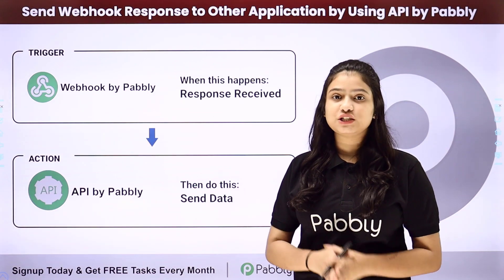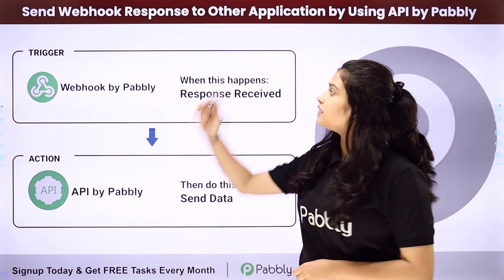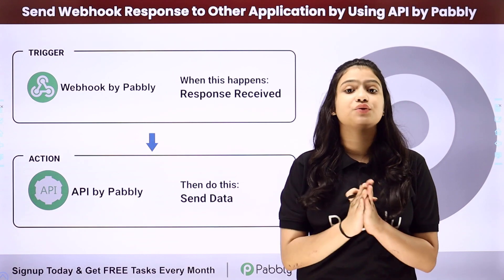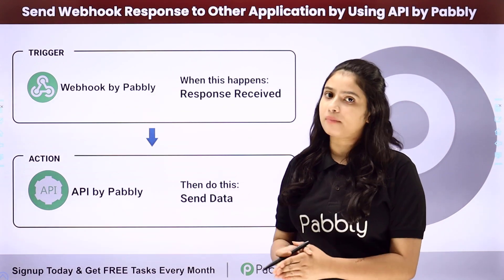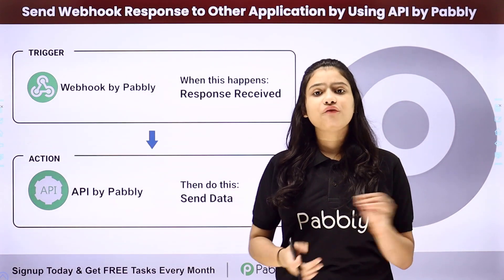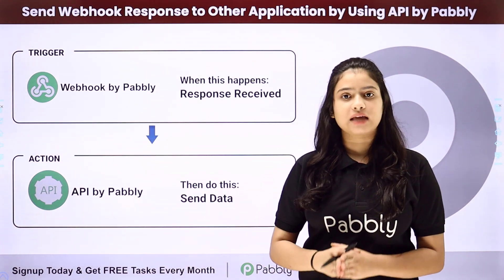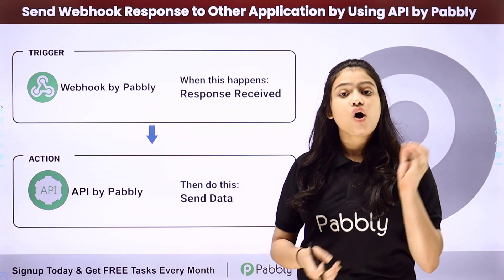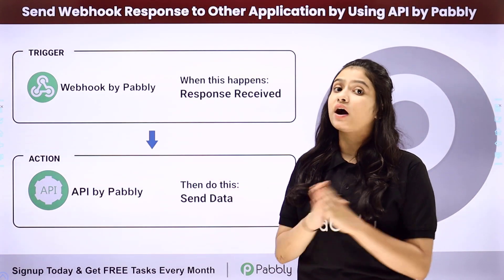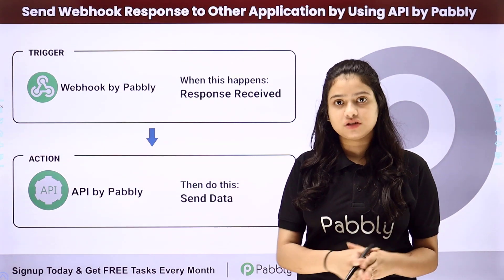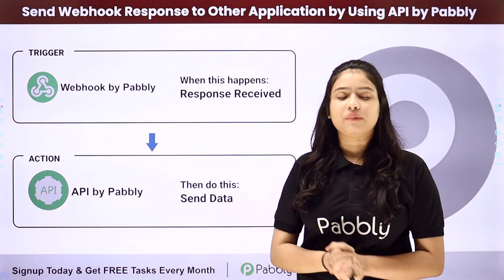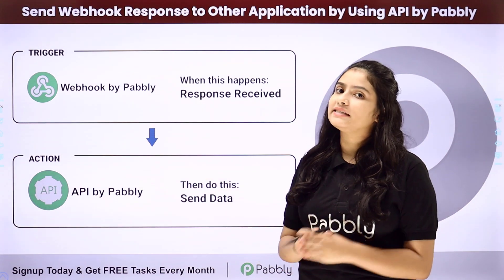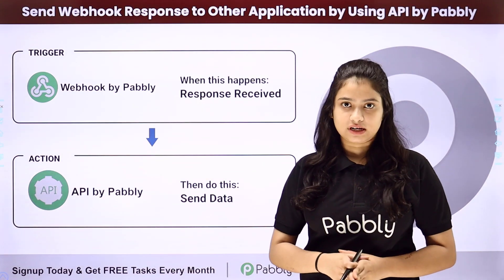Hello everyone. In this video we are going to learn how to send webhook response to other applications by using API by Pabbly. Whenever a new webhook response is captured, let's say through form submission, automatically that response should be sent to another application by using API by Pabbly. So how are we going to do this process automatically and effortlessly?